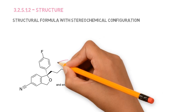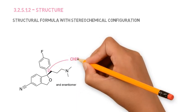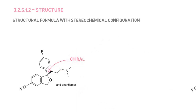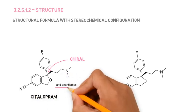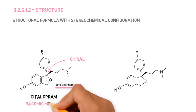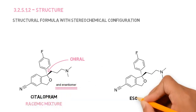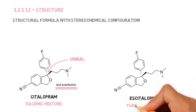For example, if an API is chiral, it must be clear through the structure if it's a racemic mixture or a specific stereoisomer. In the case of citalopram, this is a racemic mixture of two enantiomers, while escitalopram consists of only one enantiomer.